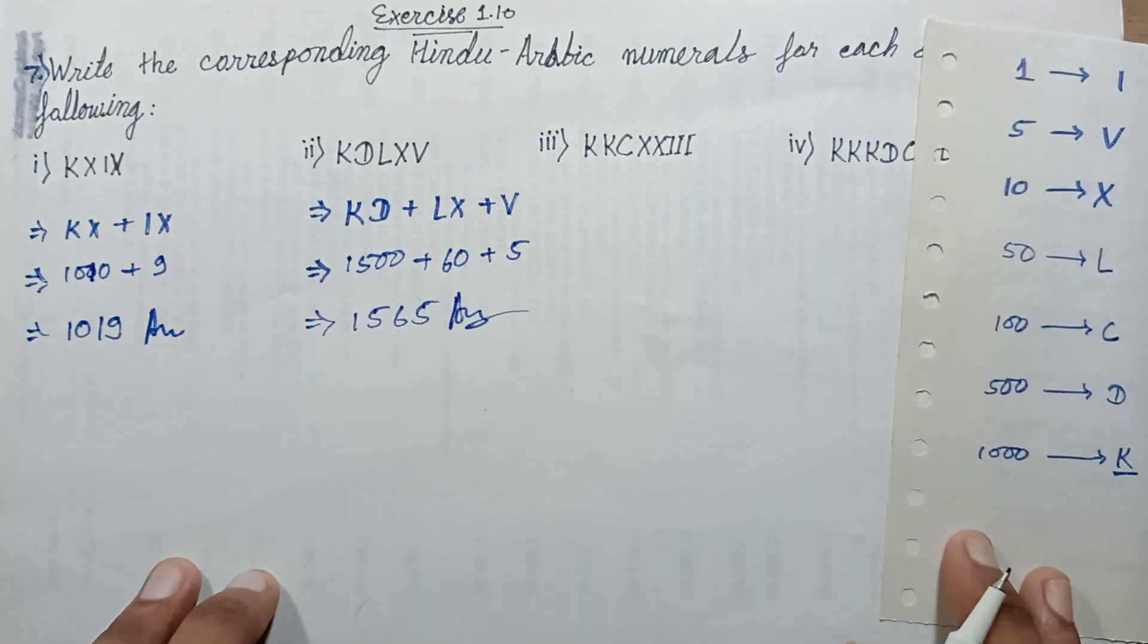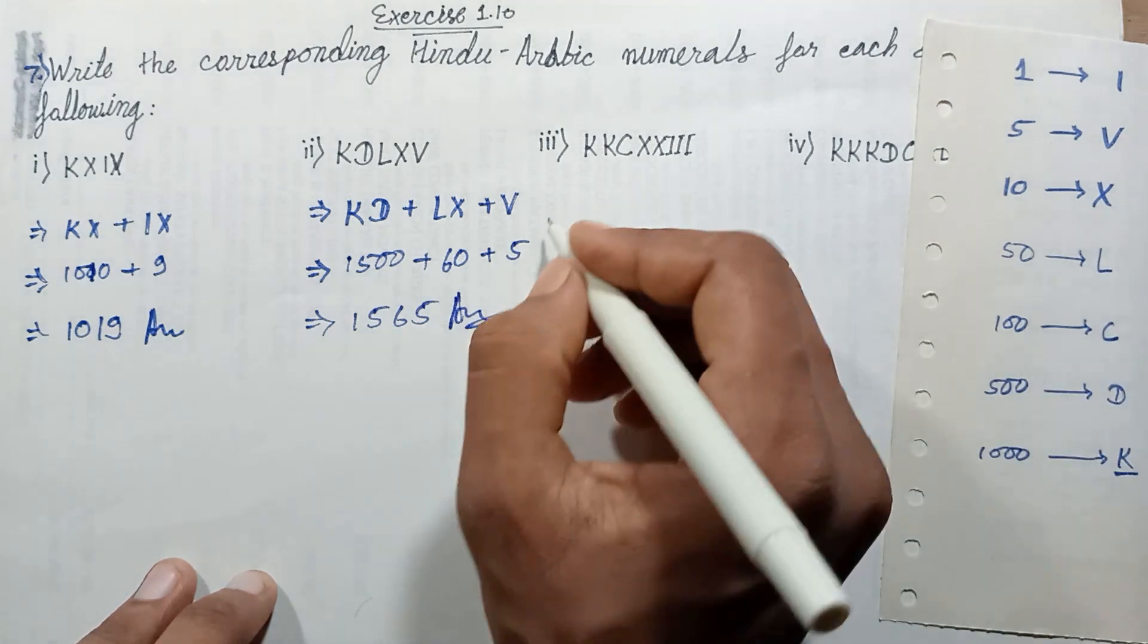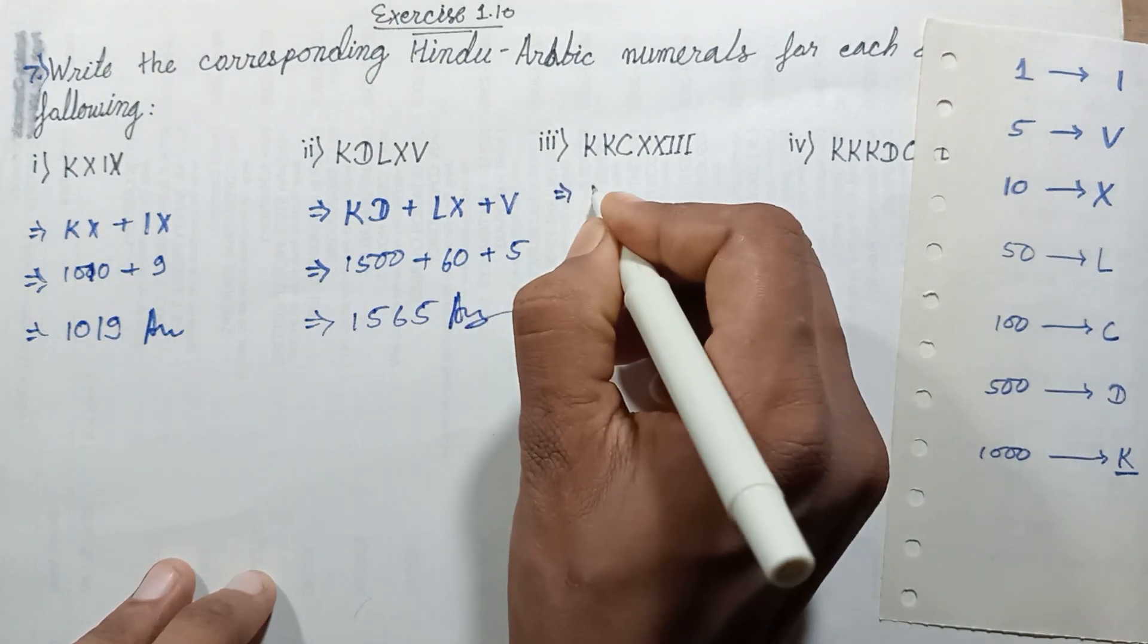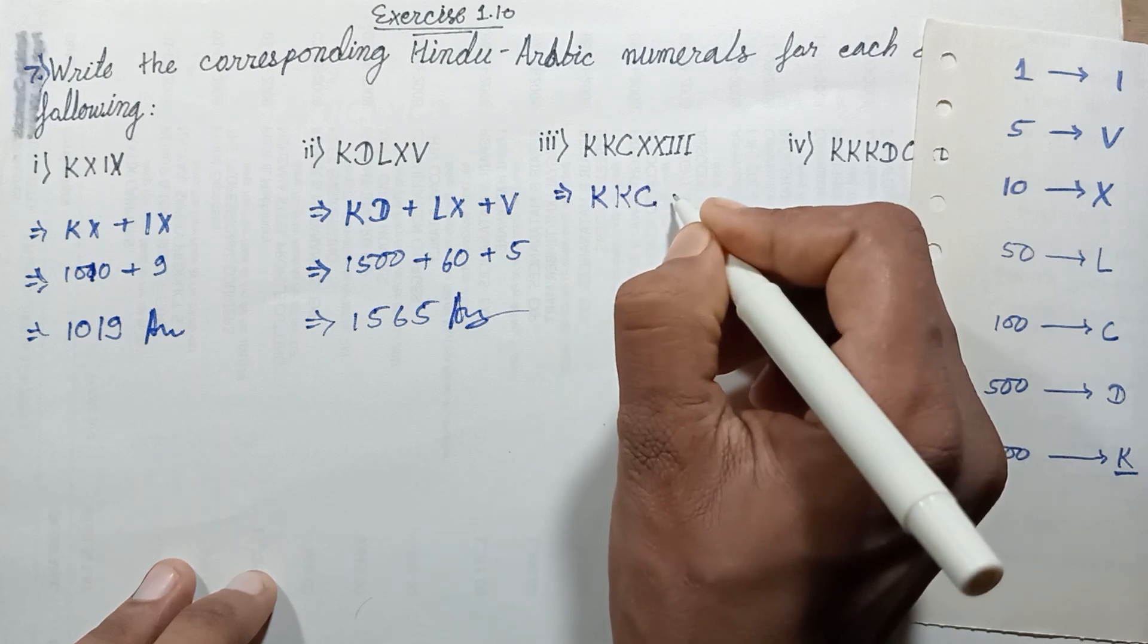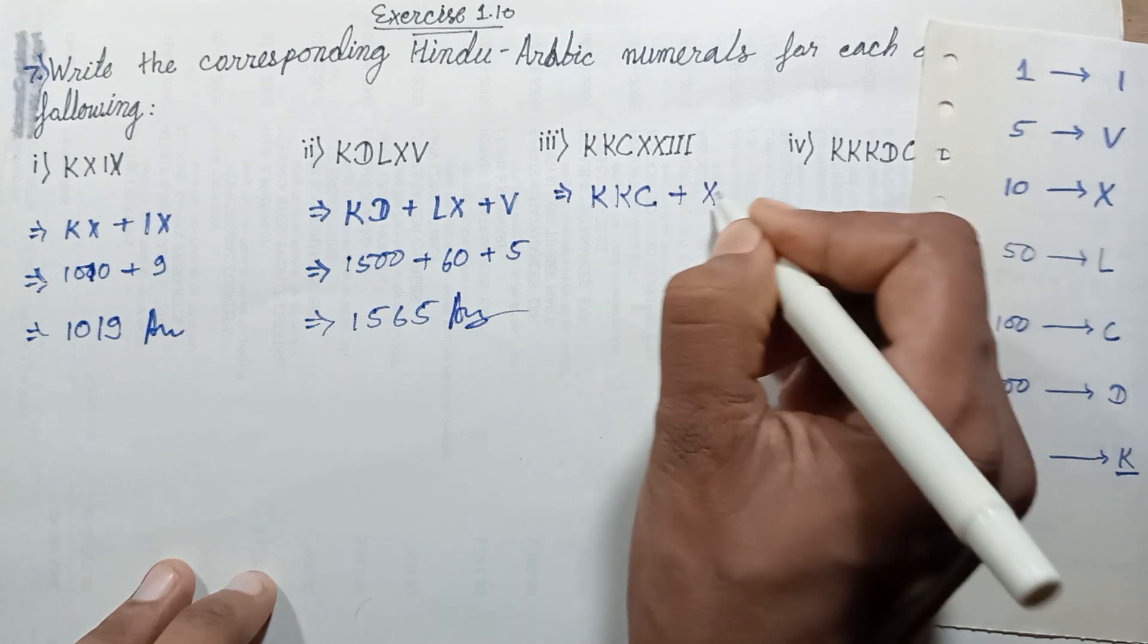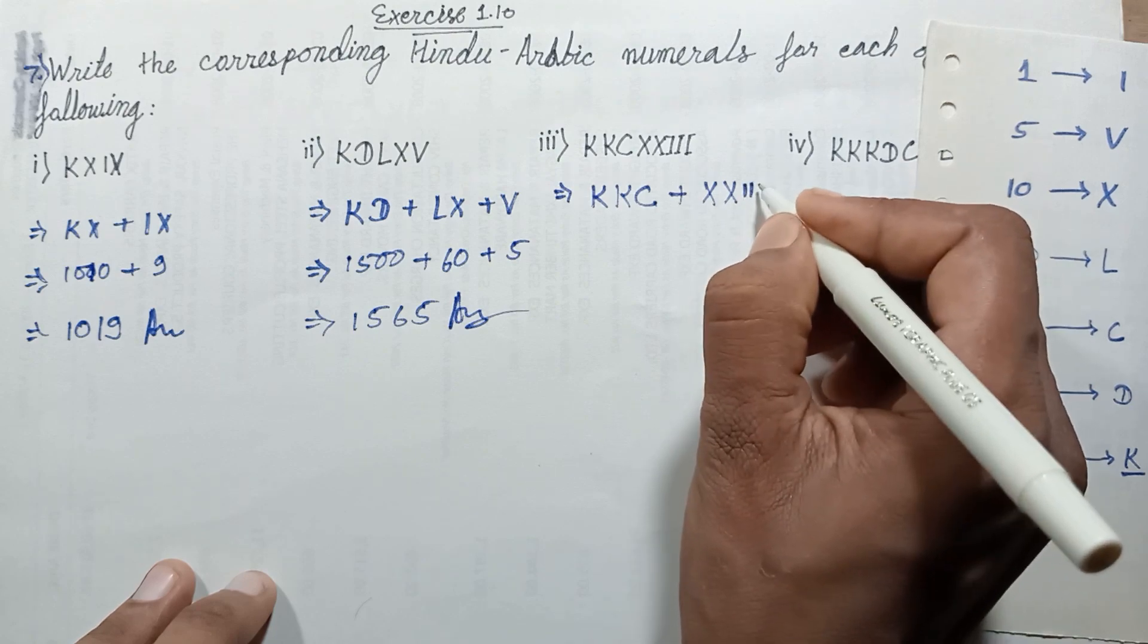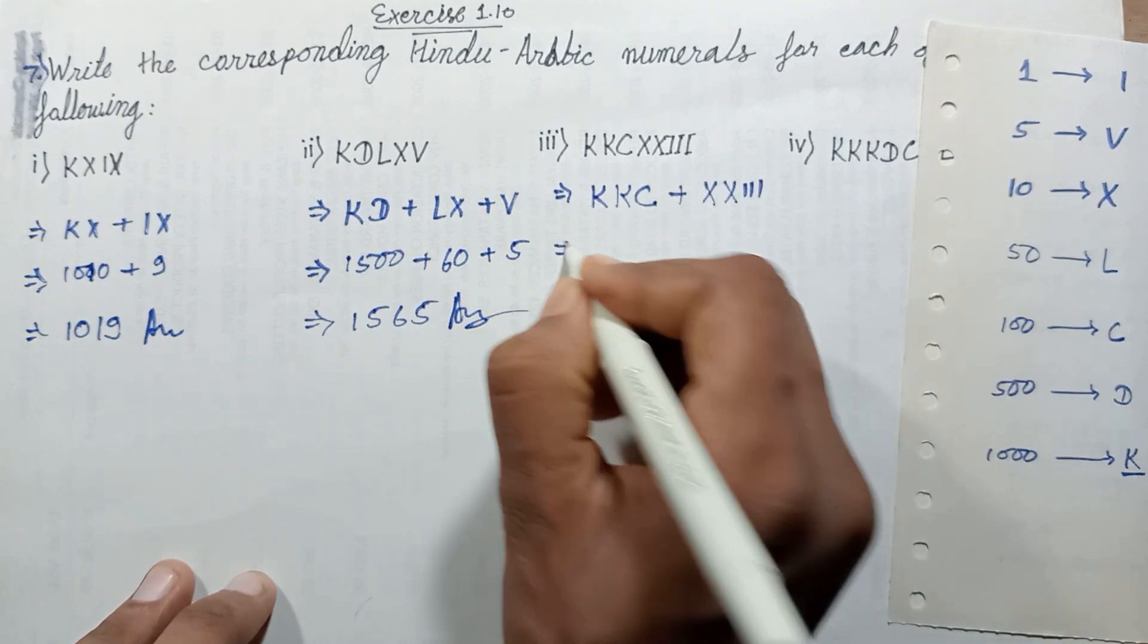Question number third is two times K and one times C. Add them up, two times X and three times I represent this place.